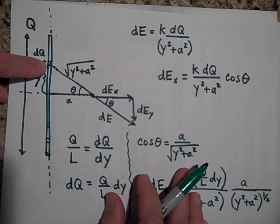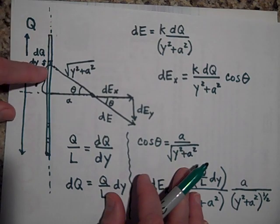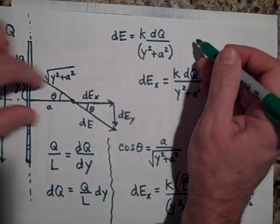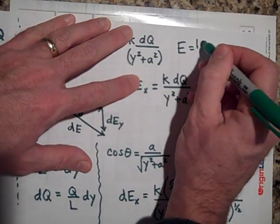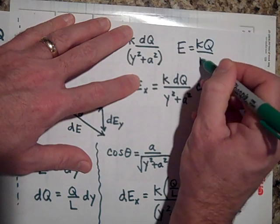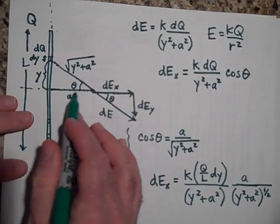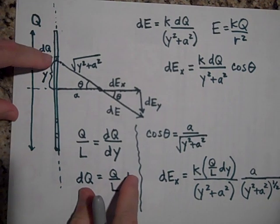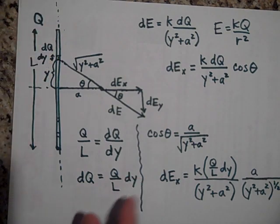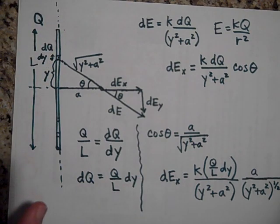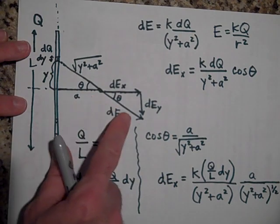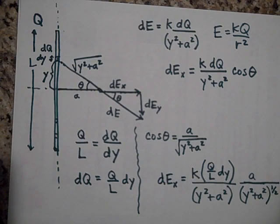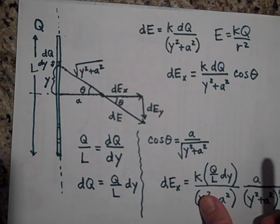And we wanted to know the electric field at distance A from its midpoint. And so we broke this into a bunch of little dQs. And I found the expression for just one of the dQs. And this expression comes from just this equation, E equals kQ over R squared. But that's tailored to the actual problem.